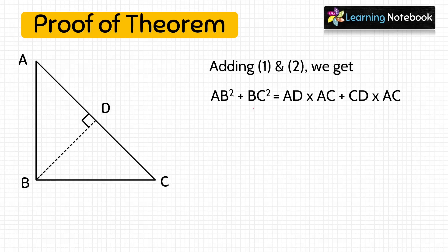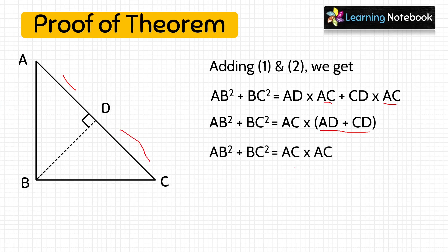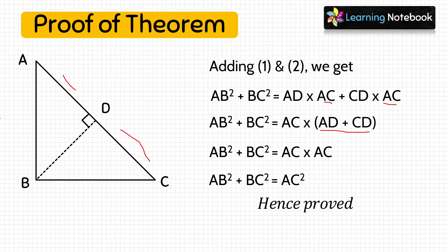Adding equations 1 and 2, we get AB² + BC² = AD × AC + CD × AC. Taking AC common, we get AC × (AD + CD). Since AD + CD = AC, this gives AC × AC = AC². Therefore, we have proved that AB² + BC² = AC², and hence we have proved the Pythagoras theorem.